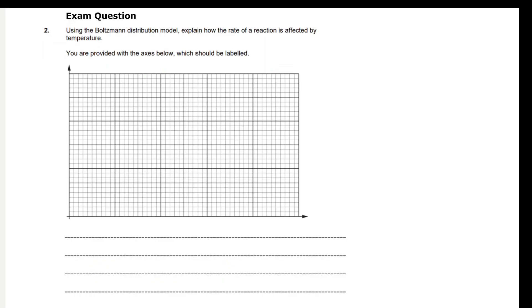So we've got an exam question: using the Boltzmann distribution model, explain how the rate of reaction is affected by temperature. You're provided with the axes below, which should be labelled, so that's important. We need to remember to label the axes.